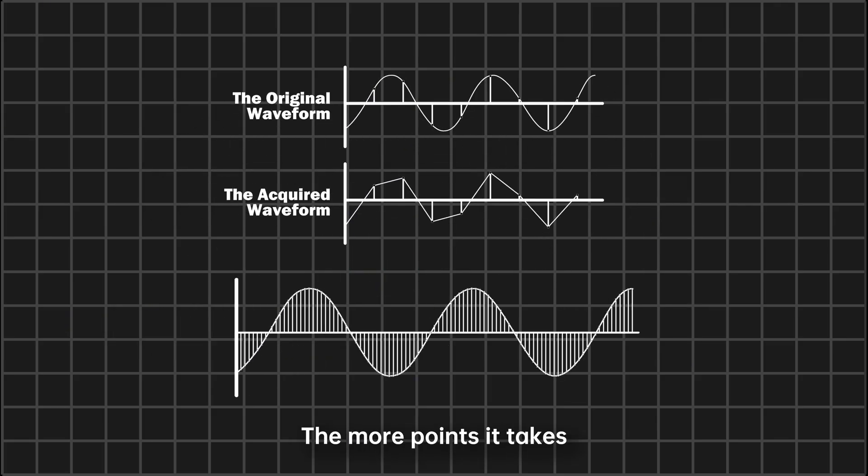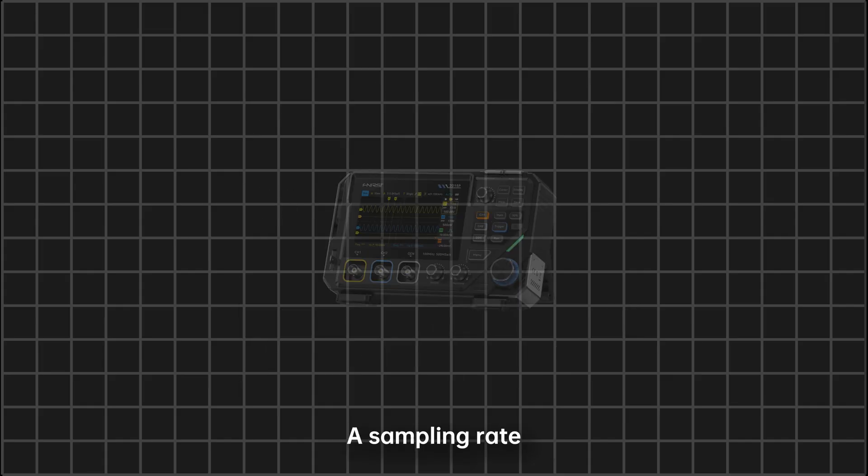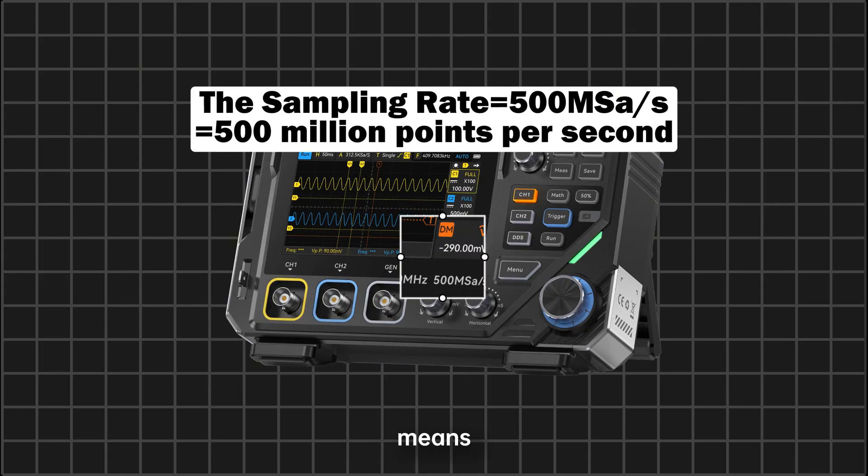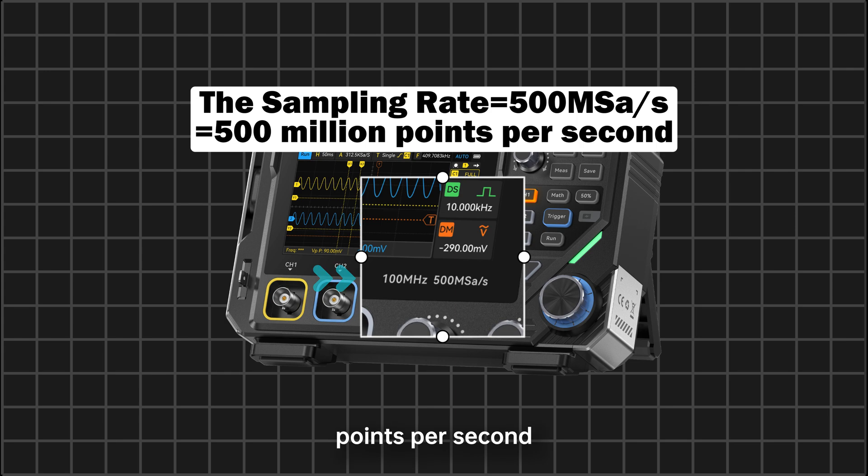The more points it takes, the smoother the waveform looks. A sampling rate on oscilloscope means it samples 500 million points per second.